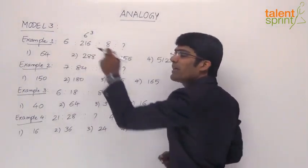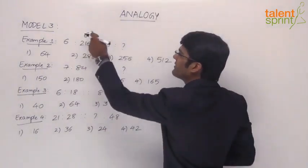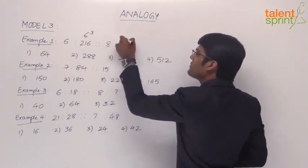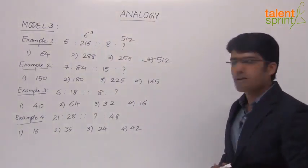So here if it is x, then x cube becomes the second number. So 6 is 6 cube, 8 should be 8 cube. What is 8 cube? 8 cube is 512. So the answer here has to be 4th option, 512.